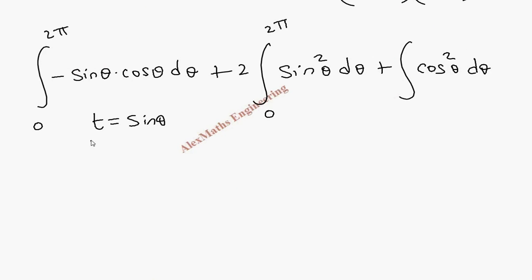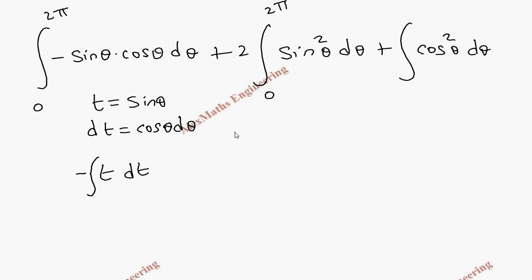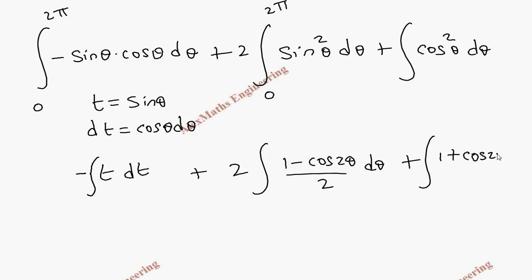For the first integral, we use the substitution t equal to sinθ, so dt equals cosθ dθ. This transforms that term into minus t dt. For sin²θ we apply the formula (1 minus cos2θ)/2 dθ, and for cos²θ we use (1 plus cos2θ)/2 dθ, integrating over 0 to 2π without limits on the substituted term.